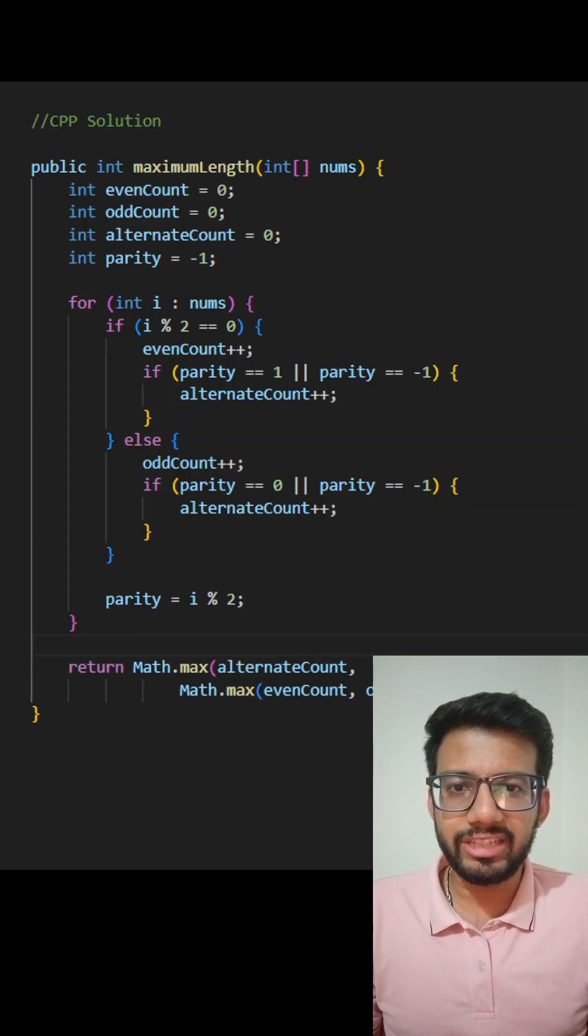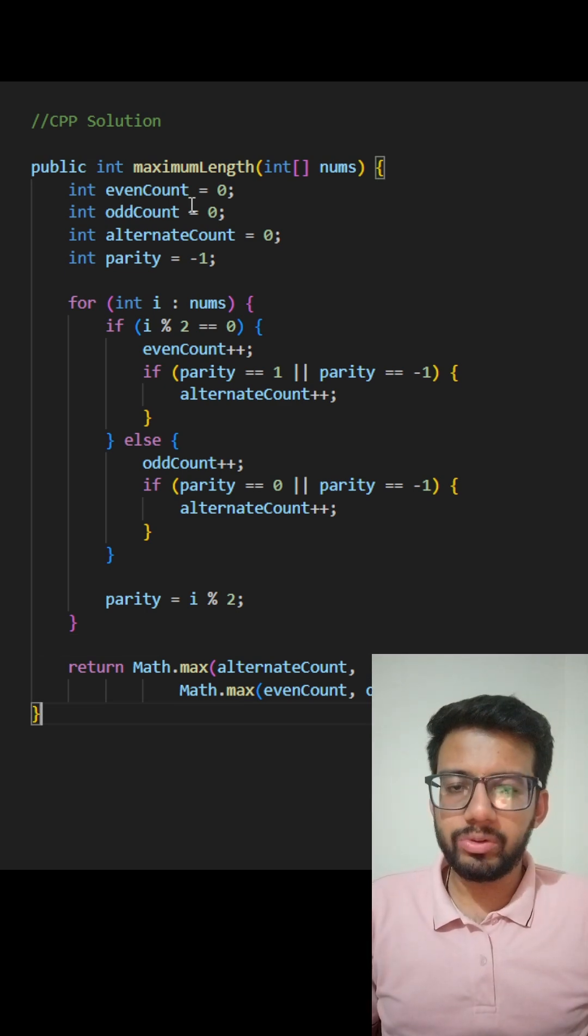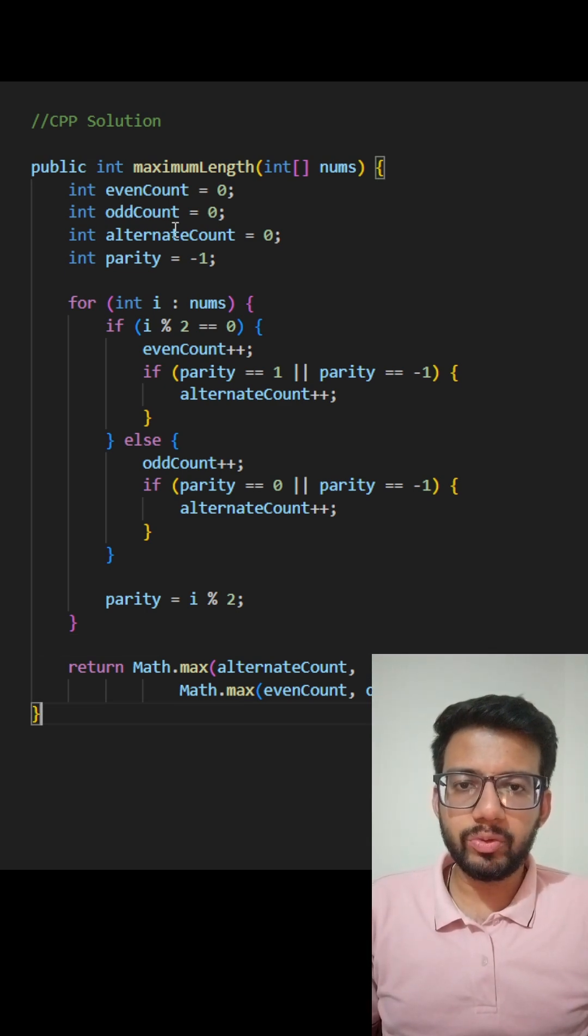I will show you this in the C++ solution. Here I have two variables, even count and odd count, to count the frequency of even and odd elements. And I have a variable alternate count to give me the count of the maximum length of alternating subsequence and a parity, which is initiated to minus 1 and is intended to tell me the parity of the previous element that I counted in my alternate count.